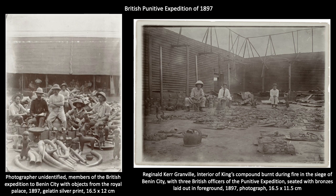In 1897, British soldiers attacked, burned, and looted the city of Benin and the royal palace in what is now called the British Punitive Expedition. They removed thousands of artworks. British colonial officers posed with piles of bronze plaques — taken from the columns of the Oba's palace — which were shipped back to Britain as spoils of war and symbols of victory. Many went to the British Museum, but others were sold, ending up in collections around the world.